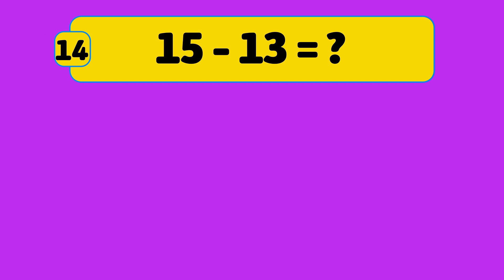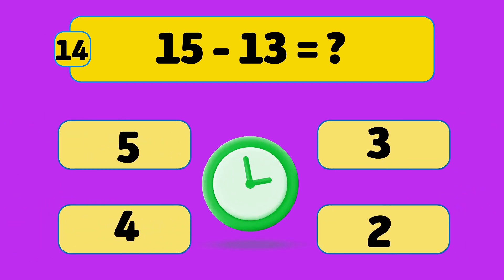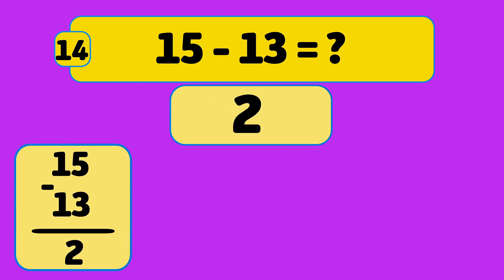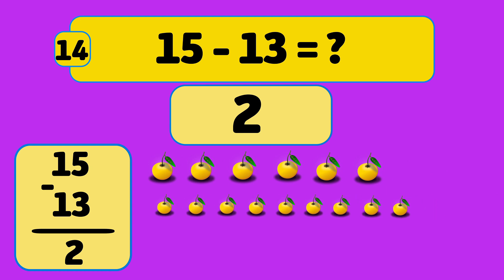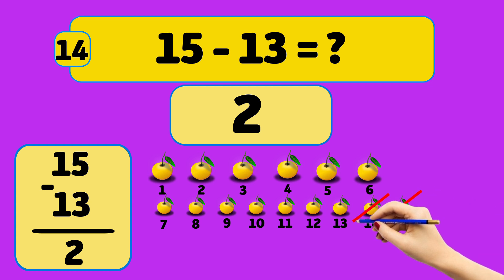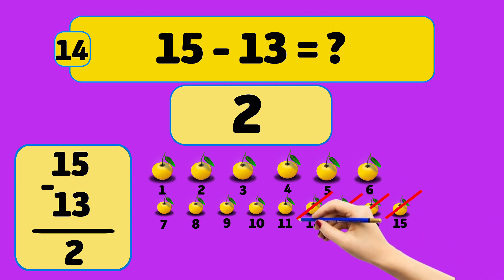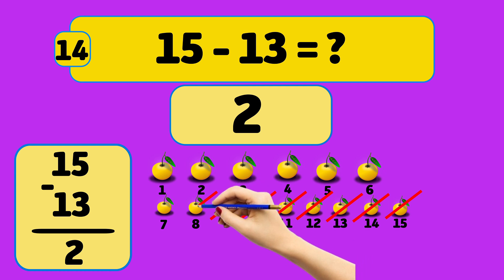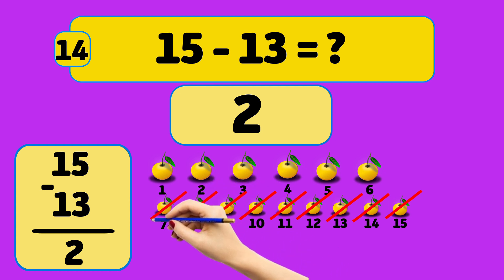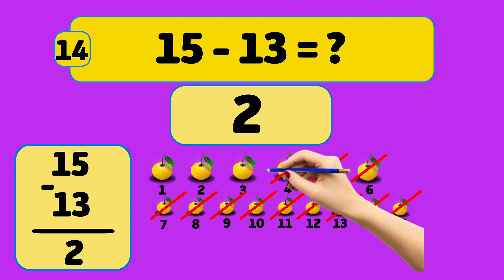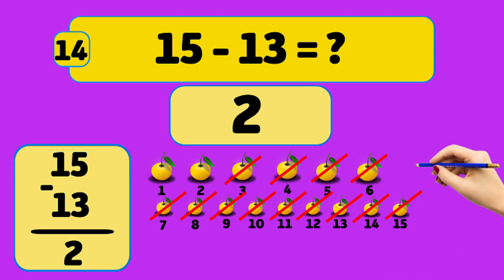What is 15 minus 13? The answer is 2. We start with 15 oranges and remove them one by one: 15, 14, 13, 12, 11, 10, 9, 8, 7, 6, 5, 4, 3. Now we have two oranges left.